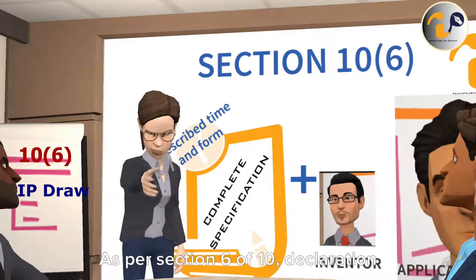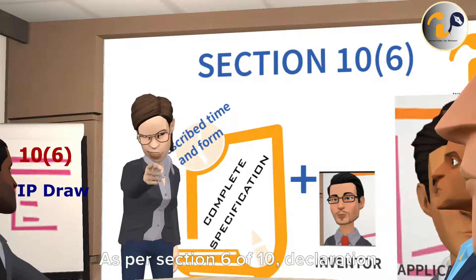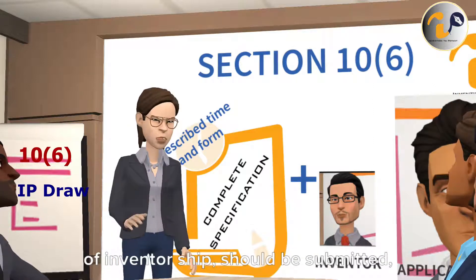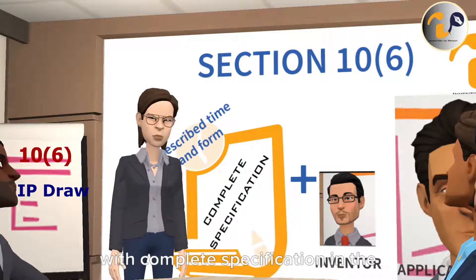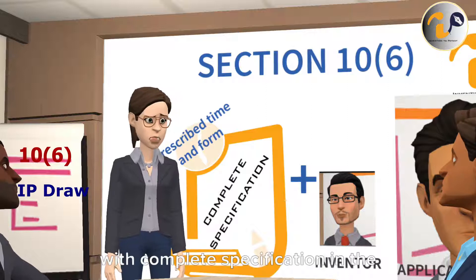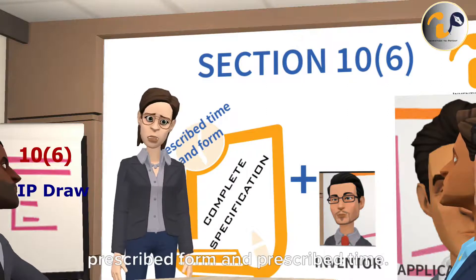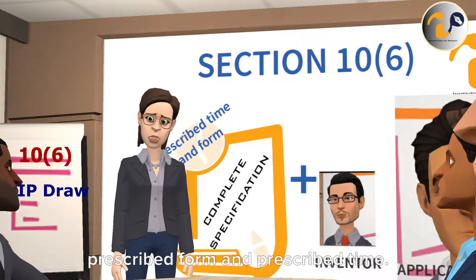As per Section 10(6), a declaration of inventorship should be submitted with the complete specification in the prescribed form and within the prescribed time.